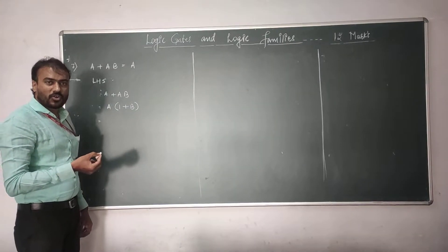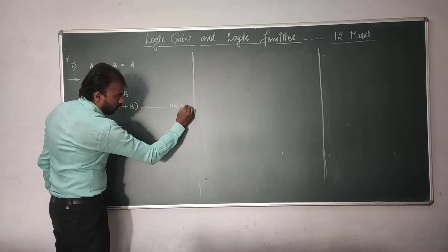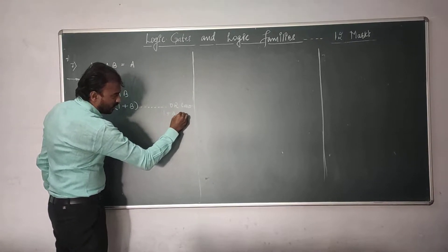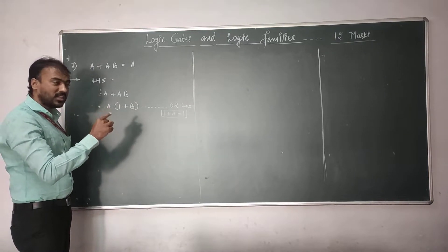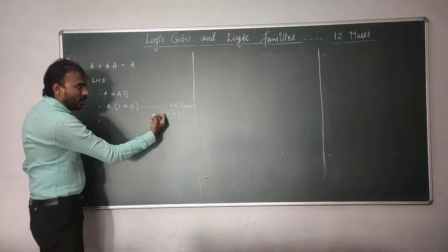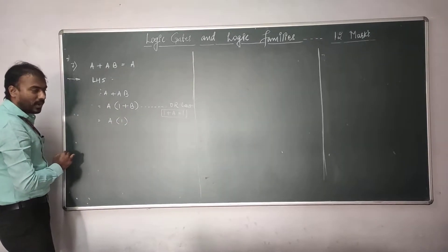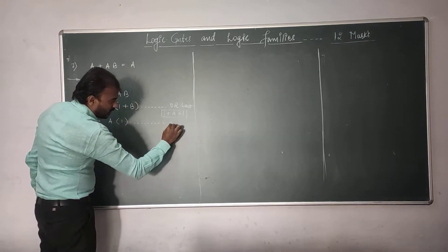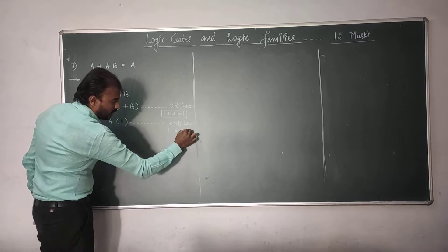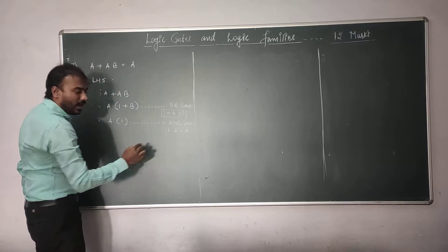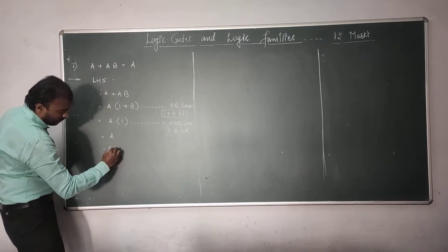If you remember the OR law we discussed in the previous video session — 1 plus A is always 1 — so 1 plus B will also be 1. We also discussed the AND law where A AND 1 is always A. So A multiplied by 1 will always be A, and this is nothing but the RHS.